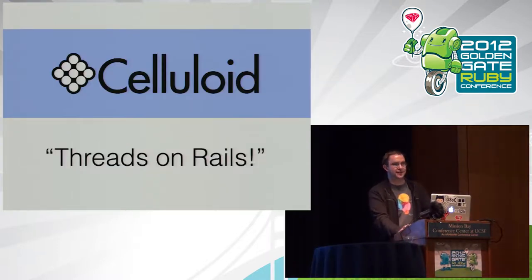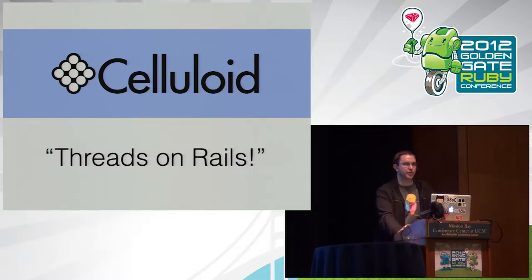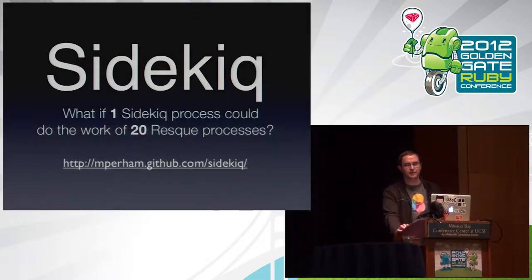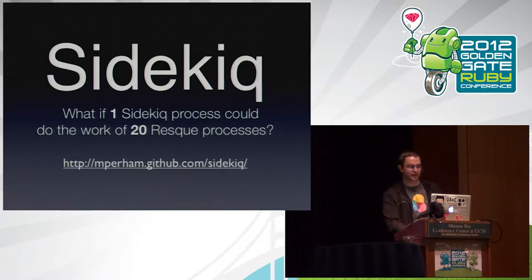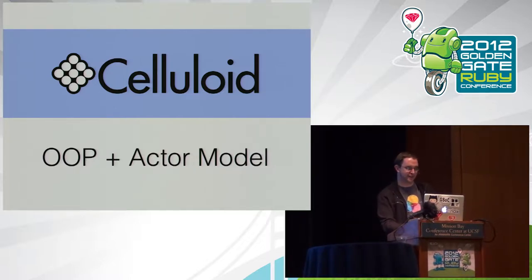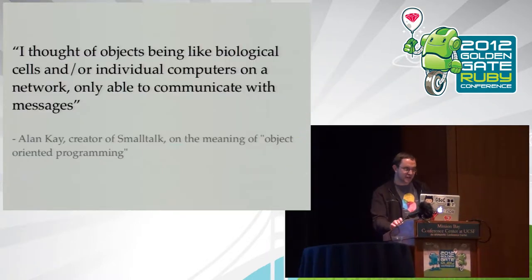Celluloid I like to think of as threads on Rails. It's a comprehensive framework with a lot of features for building multi-threaded programs and a lot of abstract and generalized solutions around that, particularly around fault tolerance. The main project you may have heard of that's using Celluloid in production is Sidekiq. Celluloid isn't like a science experiment — lots of people are running it in production right now.